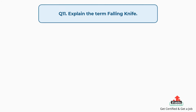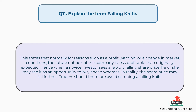Question number 11: Explain the term falling knife. This states that normally for reasons such as a profit warning or a change in market conditions, the future outlook of the company is less profitable than originally expected. Hence, when a novice investor sees a rapidly falling share price, he or she may see it as an opportunity to buy cheap, whereas in reality the share price may fall further. Traders should therefore avoid catching a falling knife.